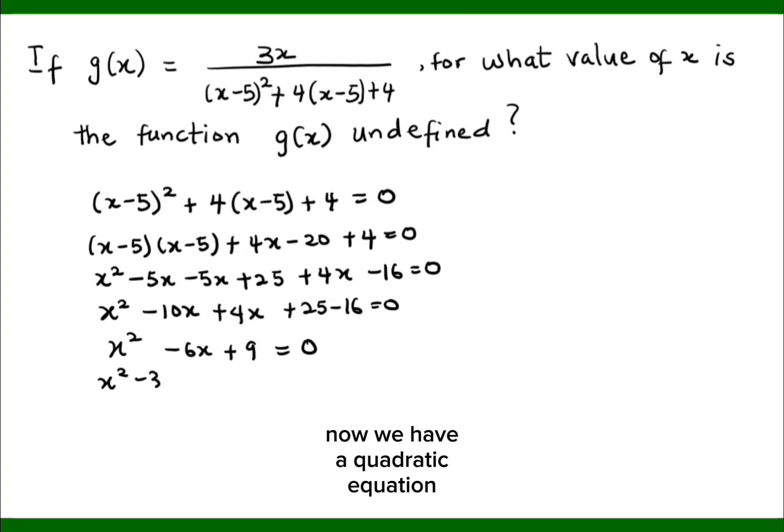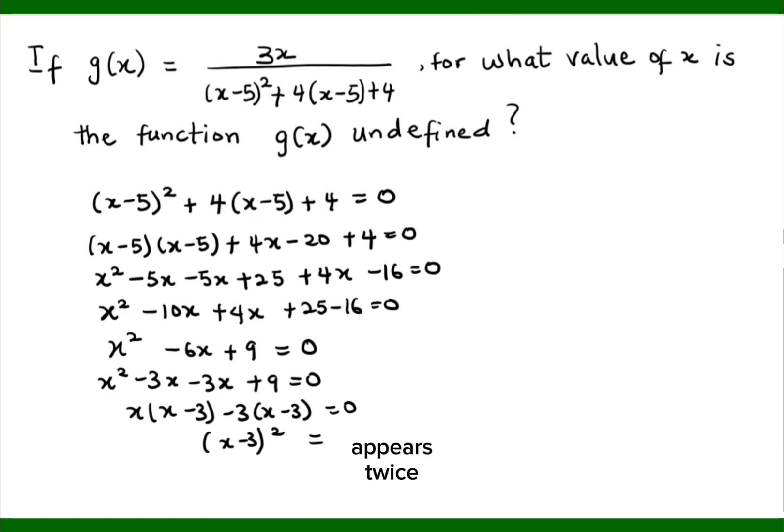Now we have a quadratic equation we can factorize to get the value of x. So this gives us x bracket x minus 3 minus 3 bracket x minus 3 equals 0. So now we see that x minus 3 appears twice, so that is x minus 3 all squared equals 0.